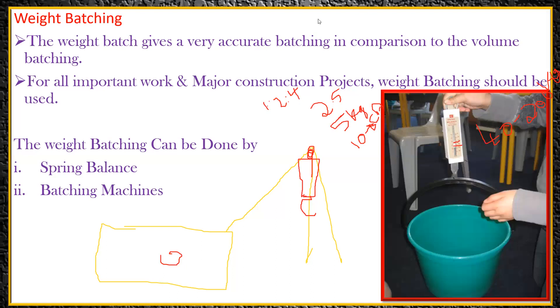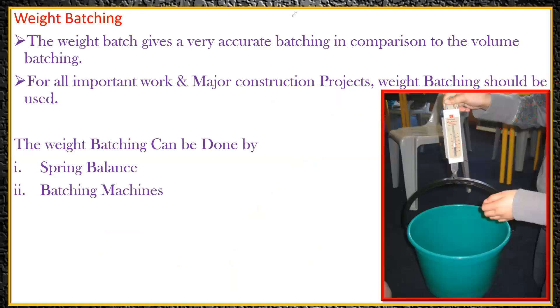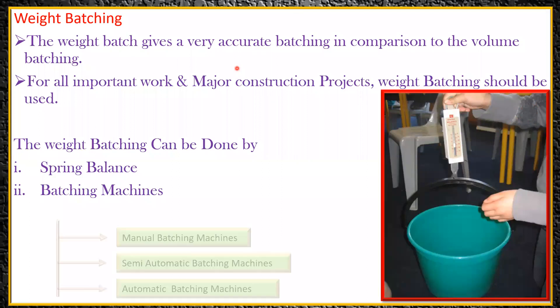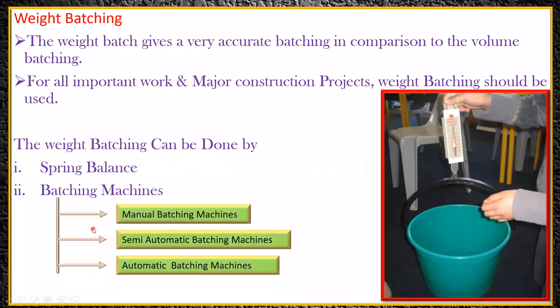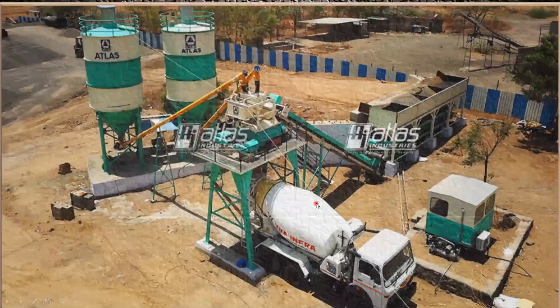Usually, instead of a spring balance, we try to go with batching machines. We have manual batching machines, semi-automatic batching machines, and automatic batching machines.